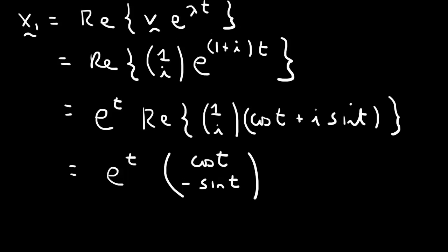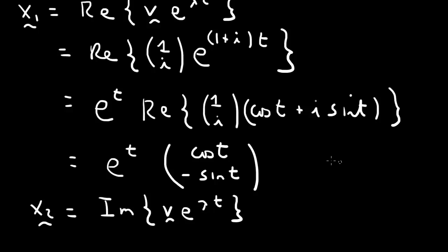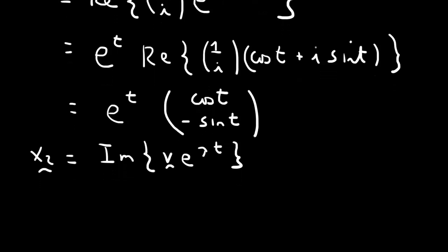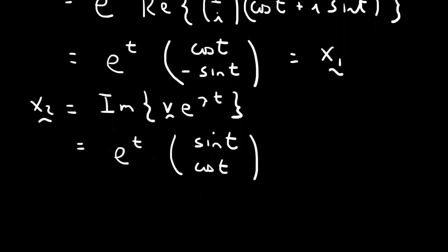The second real solution x2 is the imaginary part of v·e^(λt). Using the same expansion, we take the imaginary part of [1, i]ᵀ times (cos t + i sin t). The first row's imaginary part is sin t, and the second row i cos t minus sin t has imaginary part cos t. So x2 = e^t · [sin t, cos t]ᵀ.